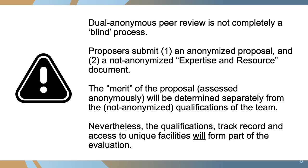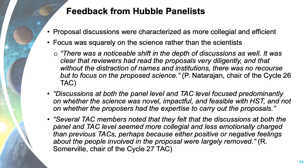Dual anonymous peer review is not a completely blind process. In NASA's implementation, we require that proposing teams submit two documents: first, an anonymized proposal, and second, a not-anonymized expertise and resources document. That latter document allows the proposing team to demonstrate why it has the qualifications, experience, and resources that will make the execution of the proposed investigation successful. Feedback from Hubble panelists — notably Rachel Somerville, chair of the Cycle 27 Hubble Time Allocation Committee — noted that panel discussions seemed more collegial and less emotionally charged, perhaps because positive or negative feelings about the people involved were largely removed.